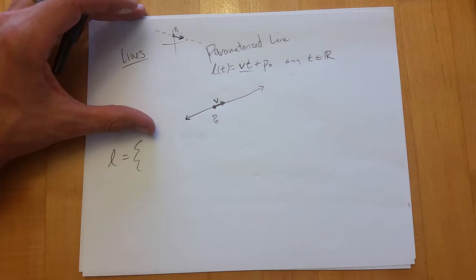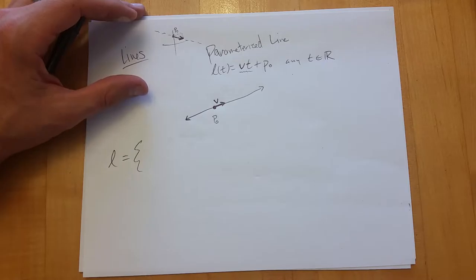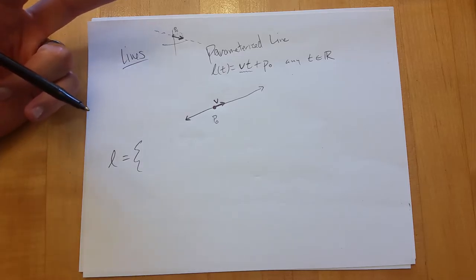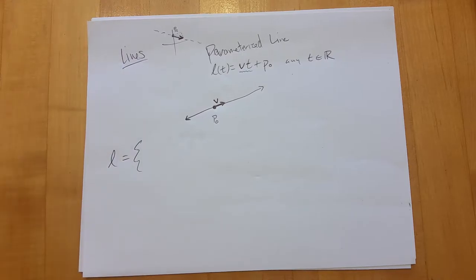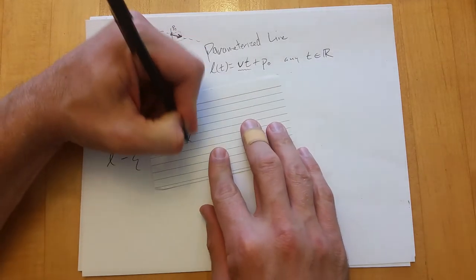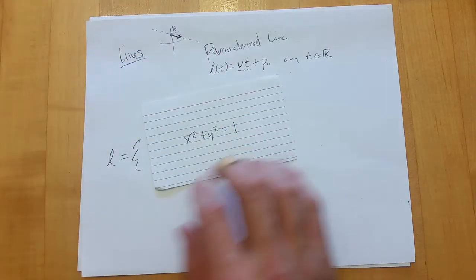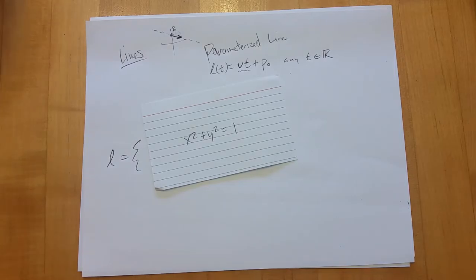This is a two-dimensional object in three-dimensional space — a plane. You'll only deal with planes in three-dimensional space. Lines always look like the parameterized form — l(t) = v·t + p-naught — no matter what dimension you're in.